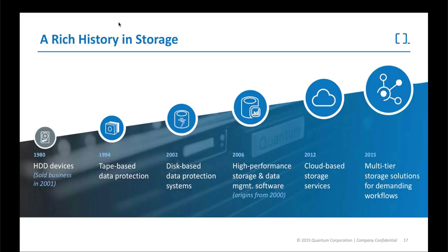They started with hard drives — everybody owned a Quantum hard drive at one point. Then they moved into tape, which has been one of their strongest pieces for years in the LTO tape market. Then into disk, and now into high-performance storage and cloud-based storage. The key piece is multi-tier storage solutions for demanding workflows. We can't put it all on one tier — it's too expensive, too important, and it slows everyone's performance. With Quantum, we have the ability to build an intelligent tiered storage solution.